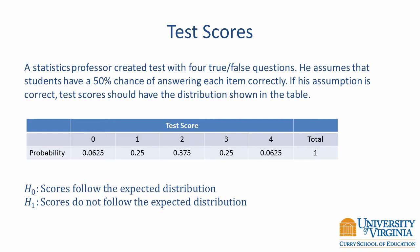He wants to know if scores follow the expected distribution or not. That is, the null hypothesis is that scores follow the expected distribution, and the alternative hypothesis is that scores do not follow the expected distribution.